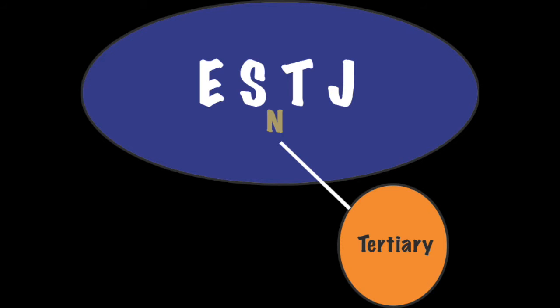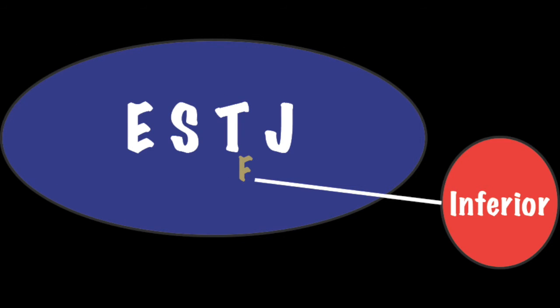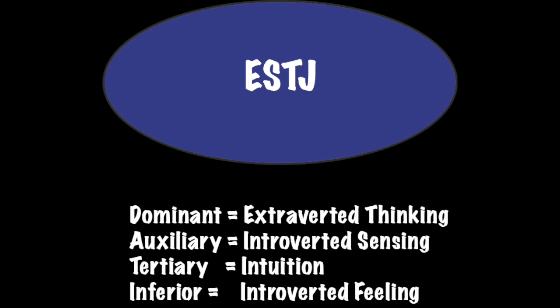Now remember, the tertiary function is not found in a type's four letter code. Finally, the ESTJ's inferior function, also hidden in the unconscious, is feeling, presented in the introverted attitude.